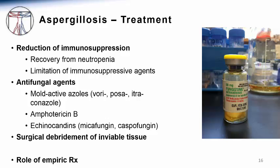Invasive Aspergillosis is often treated empirically — that means prior to the actual definitive diagnosis being made — at the first sign of potential disease in the right patient populations. This is mainly due to the imperfect means we have to diagnose this infection quickly, as well as the high mortality of the disease if therapy is delayed. However, it is also very important to pursue a precise diagnosis because many of these treatments are quite toxic, and physicians are unwilling to accept drug toxicity unless they know they are treating a particularly serious infection.